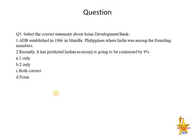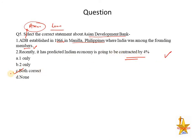The next question is related to the Asian Development Bank. ADB is an independent entity established in 1966, with its headquarters in Manila, Philippines. India was among its founding members — this is correct. ADB basically provides loans for infrastructure and development work in the Asian region. Recently, ADB predicted that India's economy will contract by 4%.